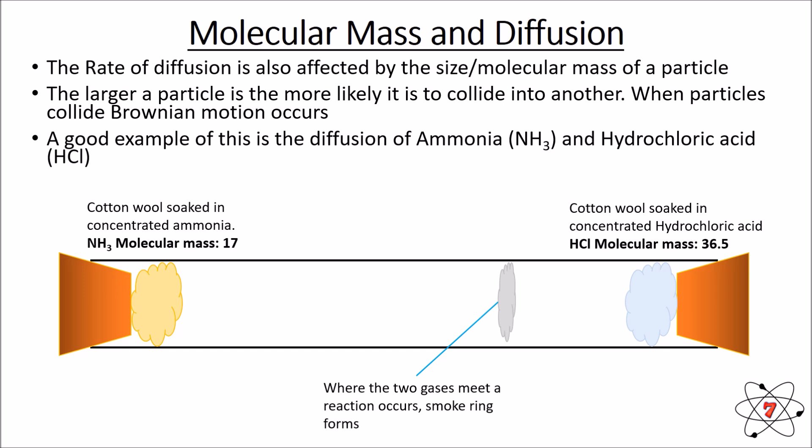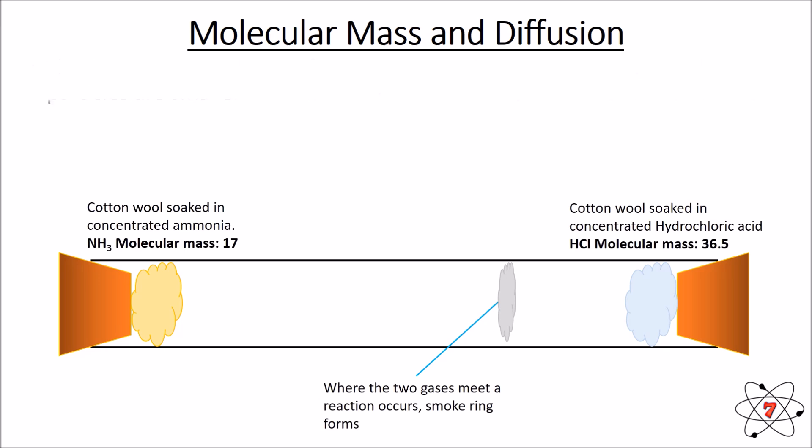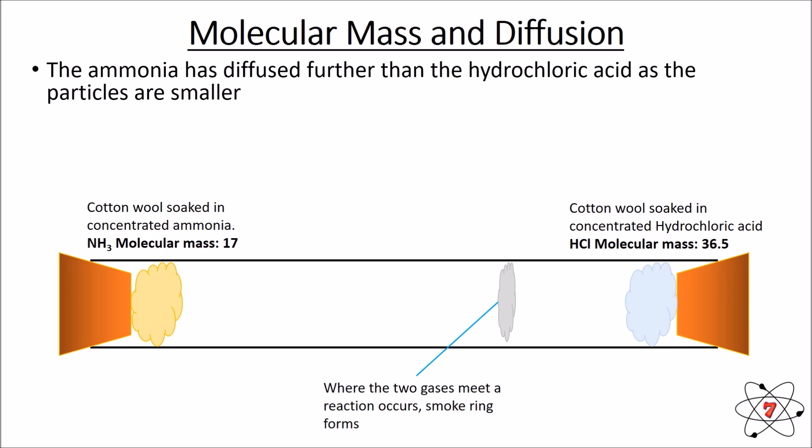So the ammonia has diffused further than hydrochloric acid because the particles are smaller. They collide less so it's easier for them to diffuse.